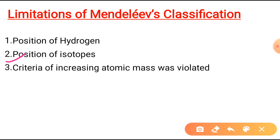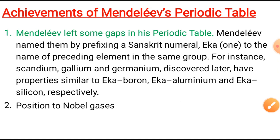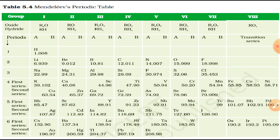Another limitation was uncertainty in atomic masses. Atomic masses do not increase in a regular manner when going from one element to the next. For example, hydrogen has mass 1, lithium 6, beryllium 9, boron 10, carbon 12 — there is no fixed interval. Because of this uncertainty, it was not possible to predict how many elements could be discovered between two elements, especially among the heavier elements.